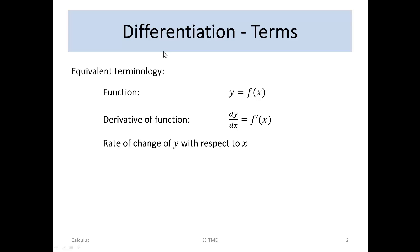Differentiation uses specific terms and some of them have equivalent meaning. For example, a function can be written as y equals something or f(x) equals something. The derivative of a function can be written as dy/dx or f'(x). Both of these terms are equivalent. The derivative means the rate of change of y — the variable on the left-hand side — with respect to x.